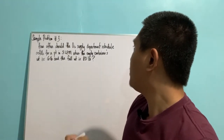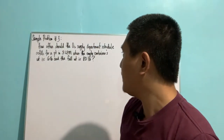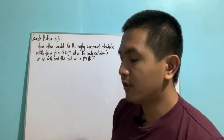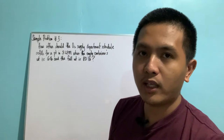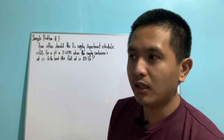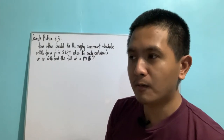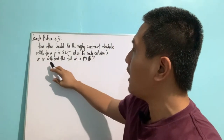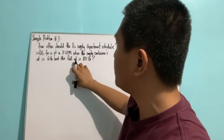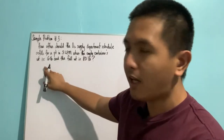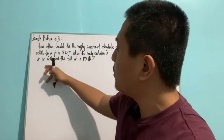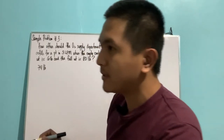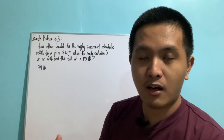Our last example: how often should the oxygen supply department schedule refills for a patient on 3 liters per minute when the empty container weighs 6 pounds and the full weight is 80 pounds? In previous examples we assumed the empty system had zero weight, but here the empty container weighs 6 pounds. We get the difference: 80 minus 6 equals 74 pounds.